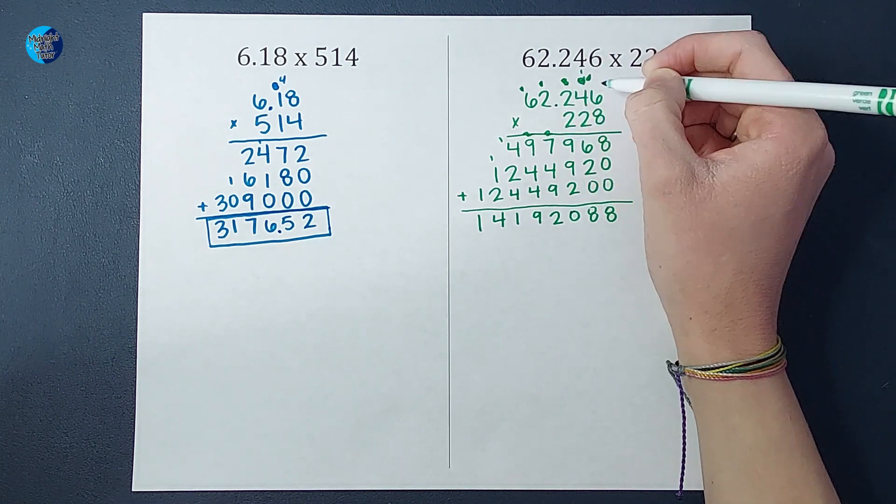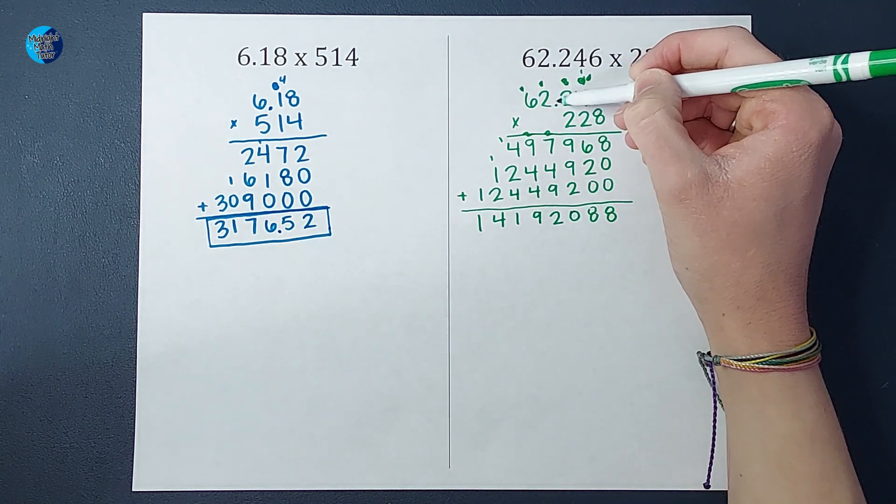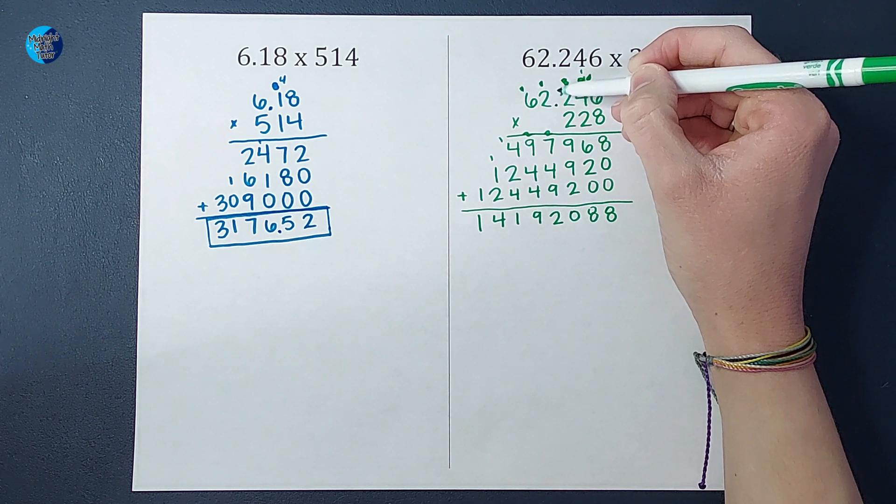And this is when I need to pay attention to my decimal again. So I go back up here. How many numbers are behind my decimal?